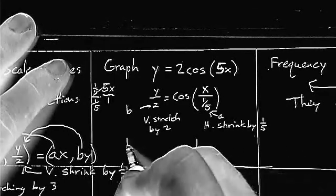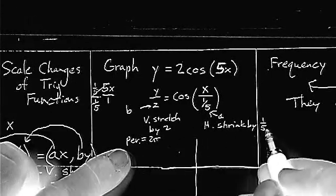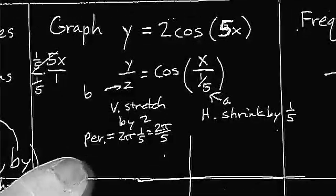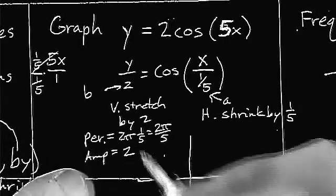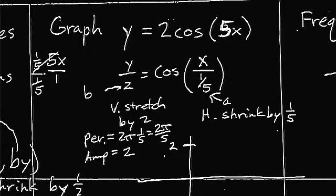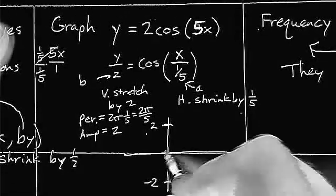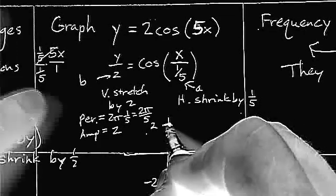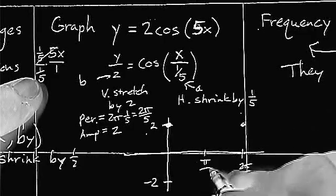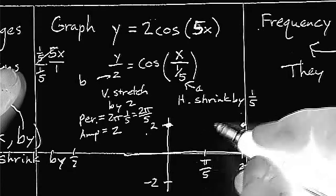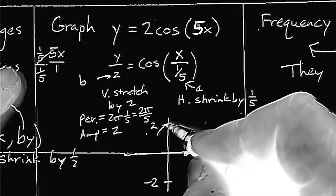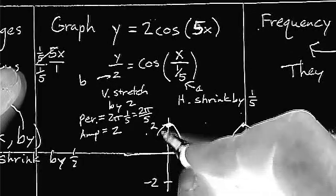Let's think about our graph. The period is 2 pi times whatever you did to the horizontal direction, which is 1 fifth, so 2 pi over 5. After 2 pi over 5 units, it will start to repeat the pattern. The amplitude was stretched by 2, going from 1 to 2 — so the highest value is 2, the lowest is negative 2. It starts at its highest point. Halfway in between is pi over 5, where we're at the lowest point. And halfway in between on each side, we're at the center line.